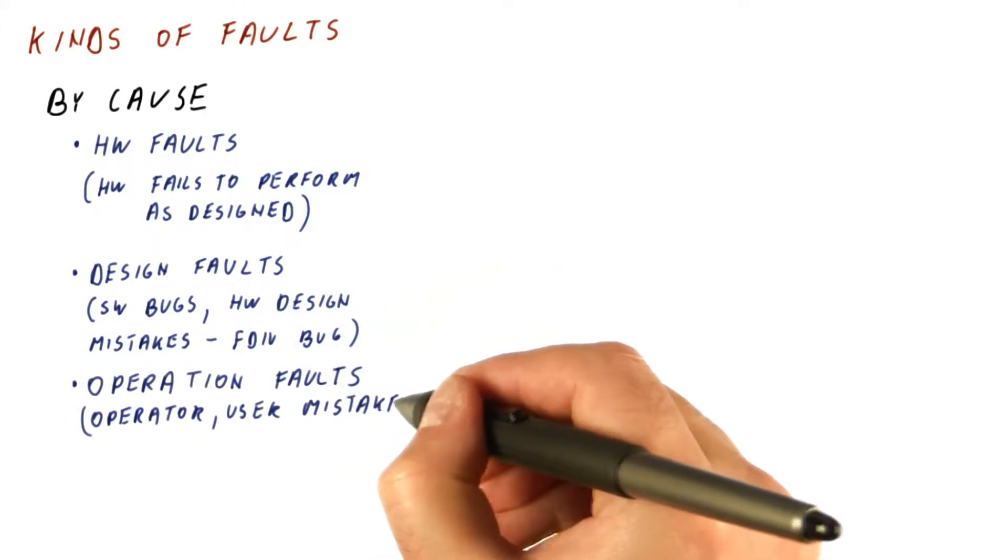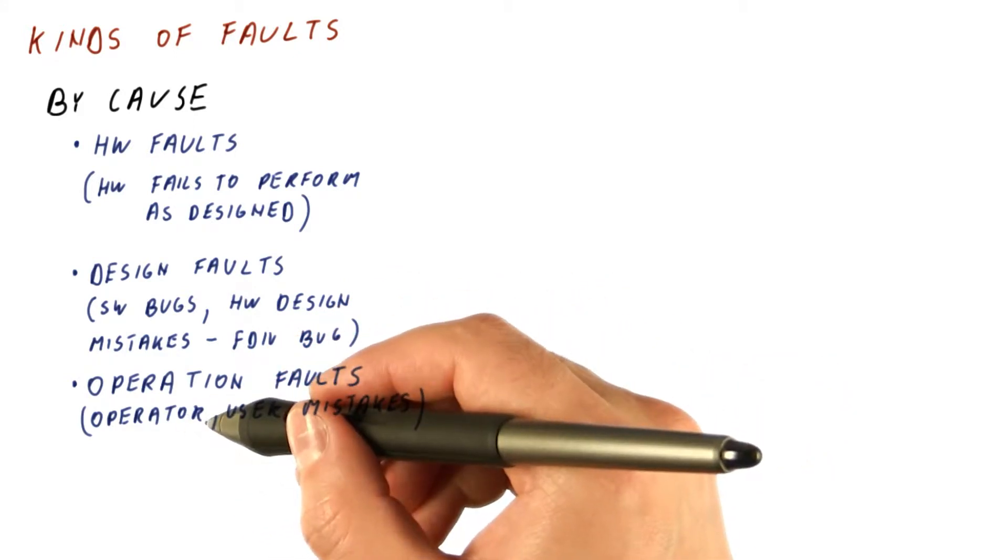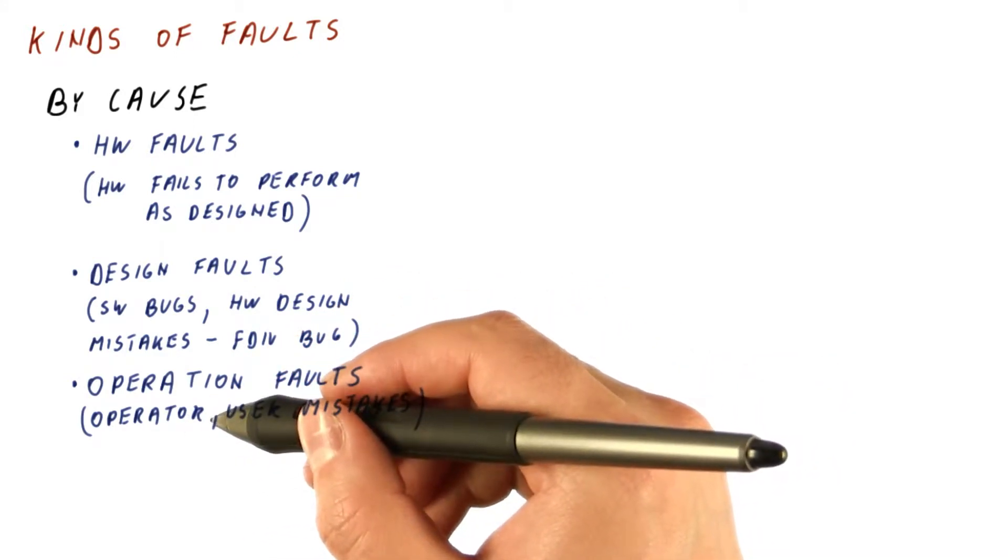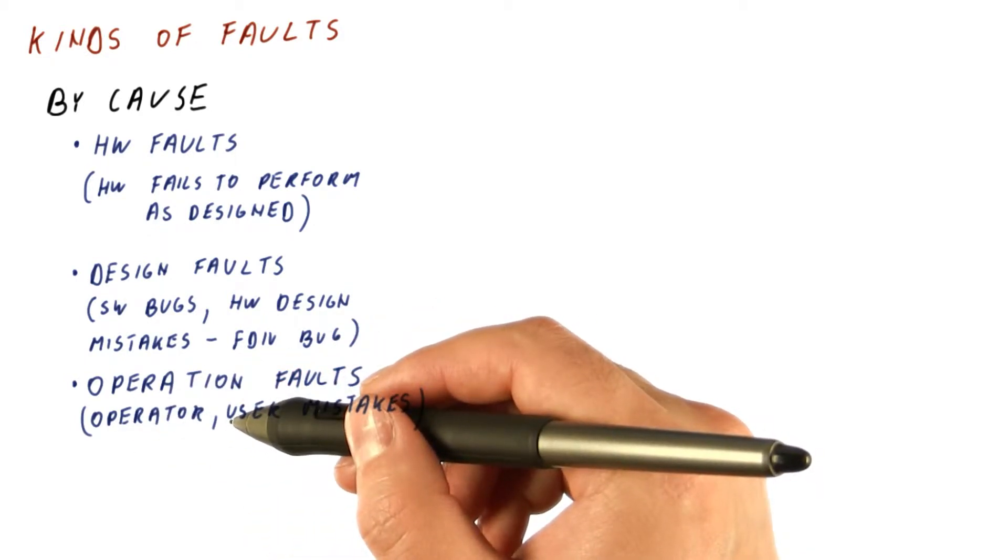Then we have operation faults, for example, operator and user mistakes. For example, the operator accidentally tells the system to shut down, and now it no longer provides the service that it's supposed to provide.